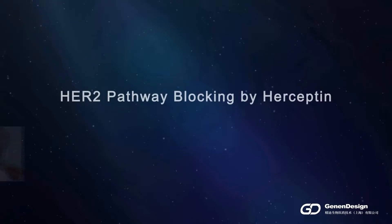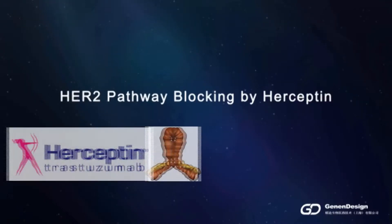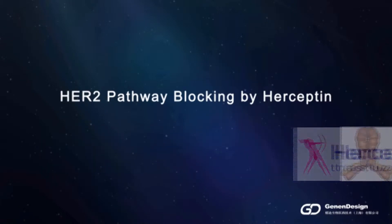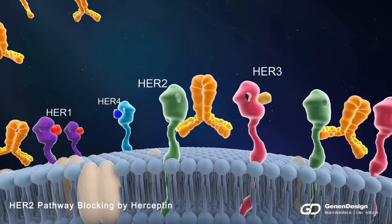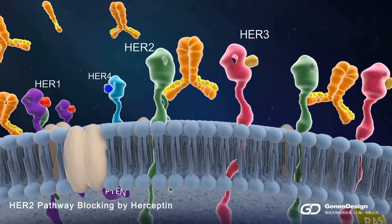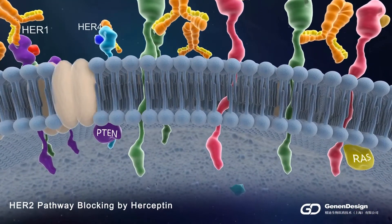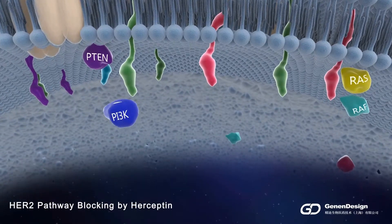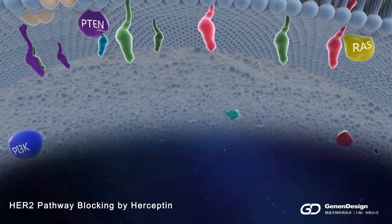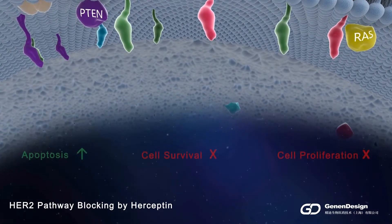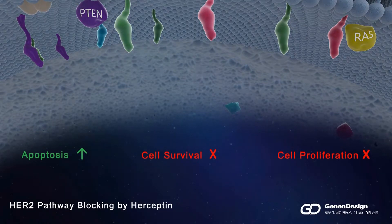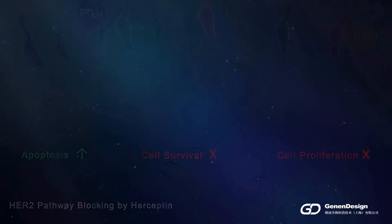Herceptin is an approved antibody drug targeting HER2 in breast and gastric cancer. Herceptin binds with high affinity to HER2 extracellular domain, disrupts HER2 downstream intracellular signaling pathways, as well as triggers antibody-dependent cellular cytotoxicity, or ADCC, in HER2 positive tumor cells.